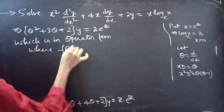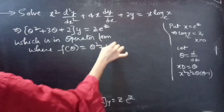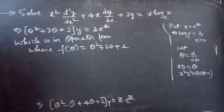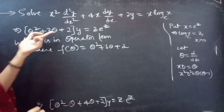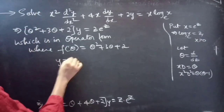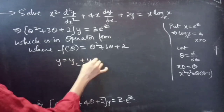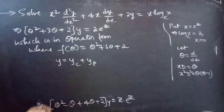Where F(θ) = θ² + 3θ + 2. Now, we need to find the general solution to the given equation. We will use the reduced equation to find the general solution, given by y = yc + yp. Let's find yc and yp.